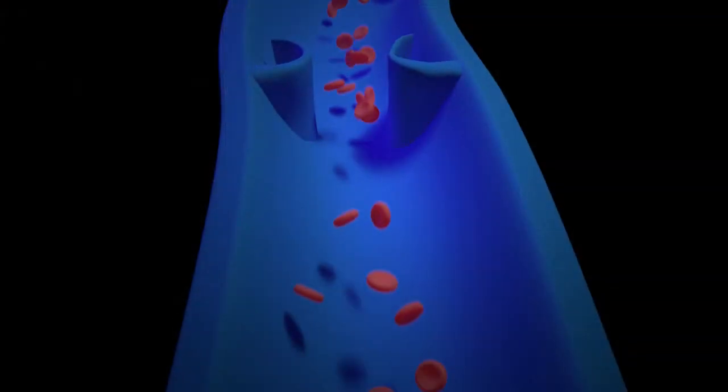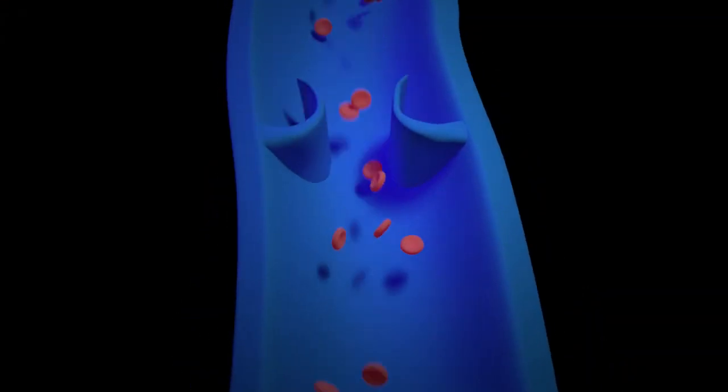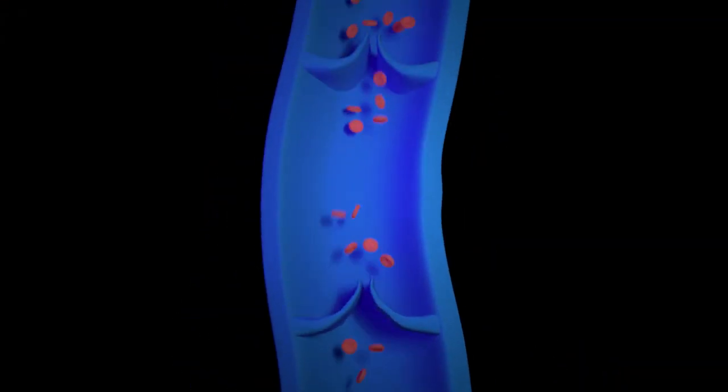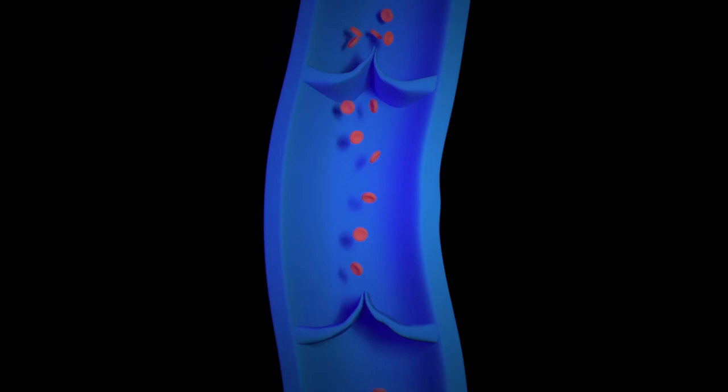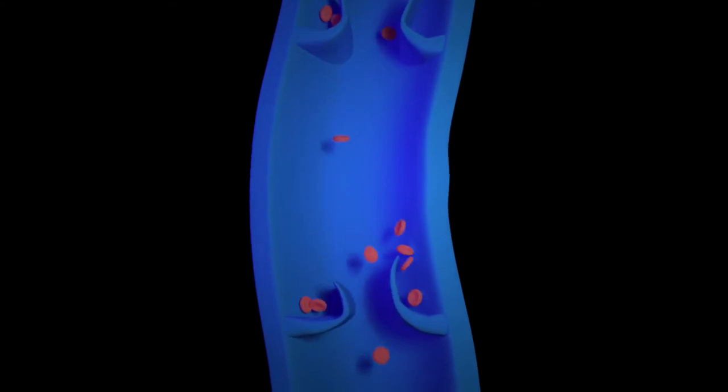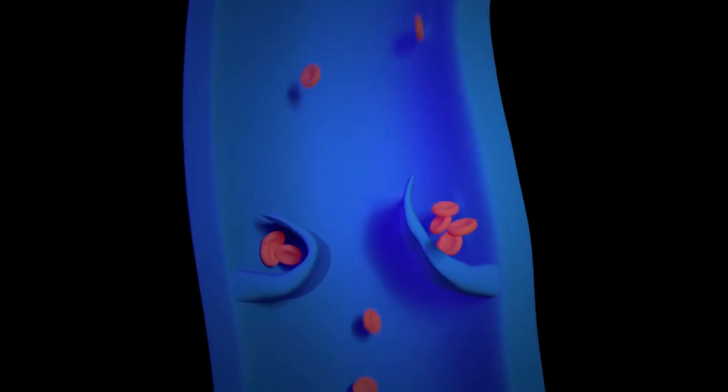Varicose vein problems can affect men and women of all ages and can result from both acquired or inherited causes. The underlying source of the varicose vein problems is a malfunction in the valves of the veins. The valves of the veins help the blood move from the legs back to the heart. These one-way valves keep the blood moving in one direction and prevent the blood from flowing backwards.